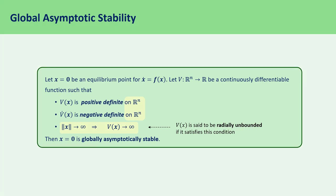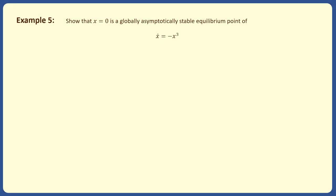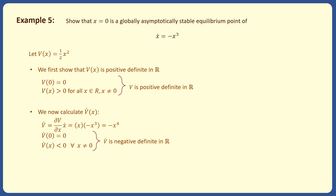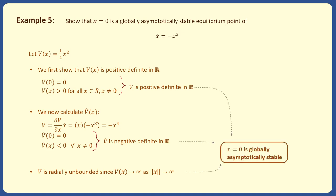We finish this lecture with an example. We want to show that the origin is a globally asymptotically stable equilibrium point of x_dot = -x³. We choose a function V = (1/2)x². This is positive definite as it is 0 at 0 and positive for all other points in R. We then calculate V_dot, which equals -x⁴. Since V_dot is 0 at 0 and negative for all other points, it is a negative definite function. Finally, V is radially unbounded, since V(x) goes to infinity as the norm of x goes to infinity. So all conditions of the theorem are satisfied and we conclude that the origin is globally asymptotically stable.